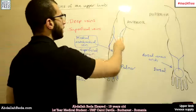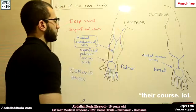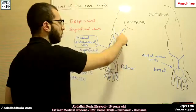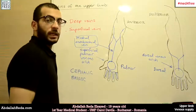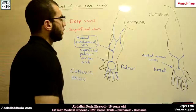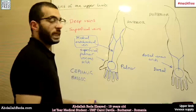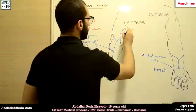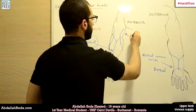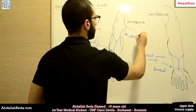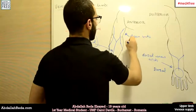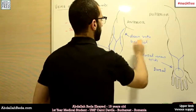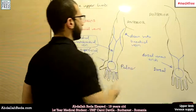Both veins then continue their course. The basilic vein drains into one of the brachial veins — those that accompany the brachial artery.